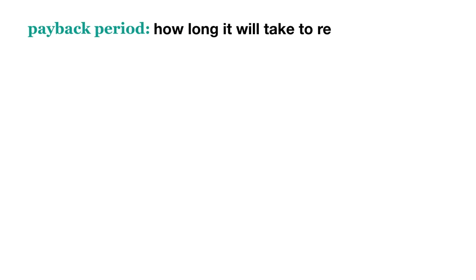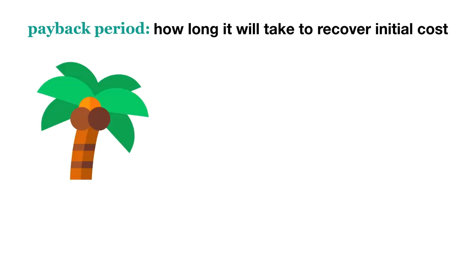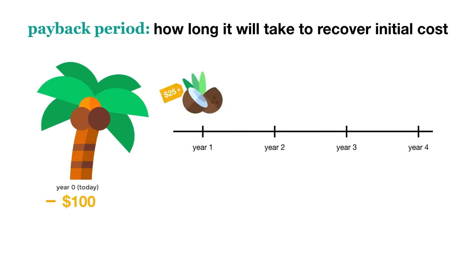Let's start with payback period. The payback period tells us how long it will take for us to recover a project's initial cost. For example, if I buy a coconut tree for $100 and each year I can sell my coconut harvest for $25, it will take me four years to recover the $100.